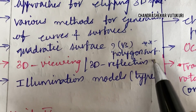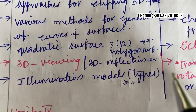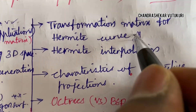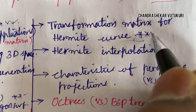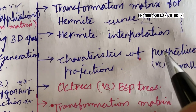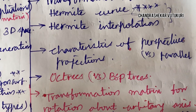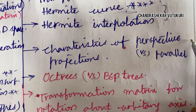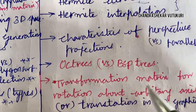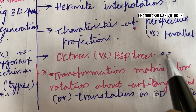3D viewing and 3D reflection is a short question. Illumination models may also be a short question. Transformation matrix for Hermite curve is said to be a topmost and common short question, and the Hermite interpolation characteristics of perspective projections — sometimes the short question will be on the differences between perspective versus parallel projection. Octrees versus BSP trees is also a short question.